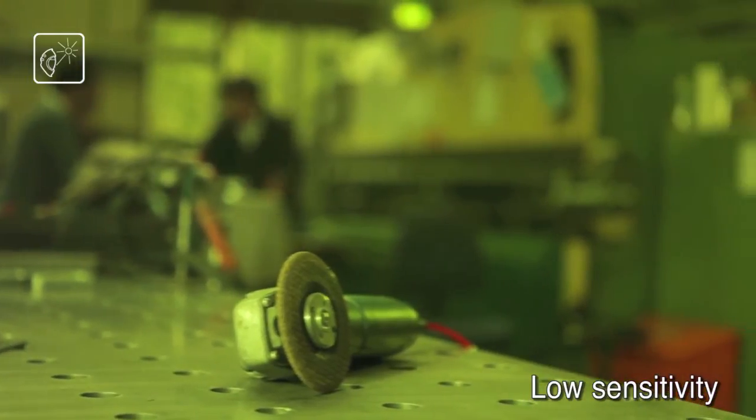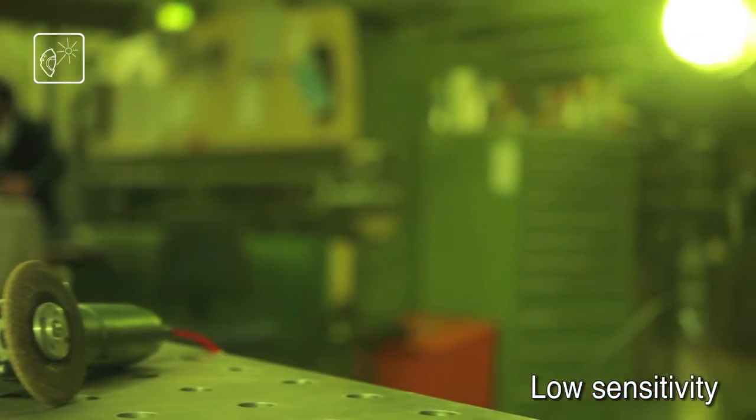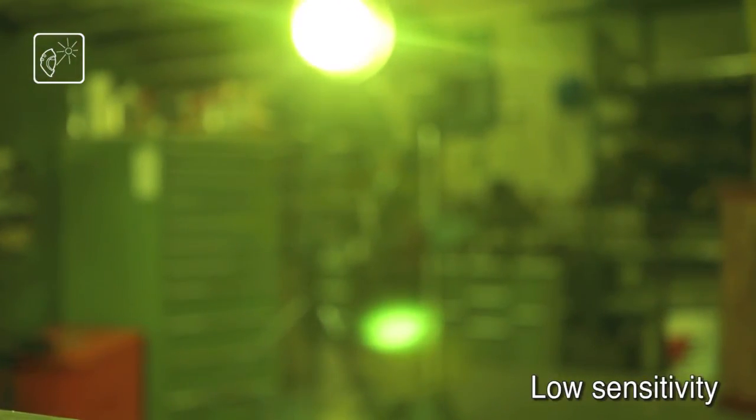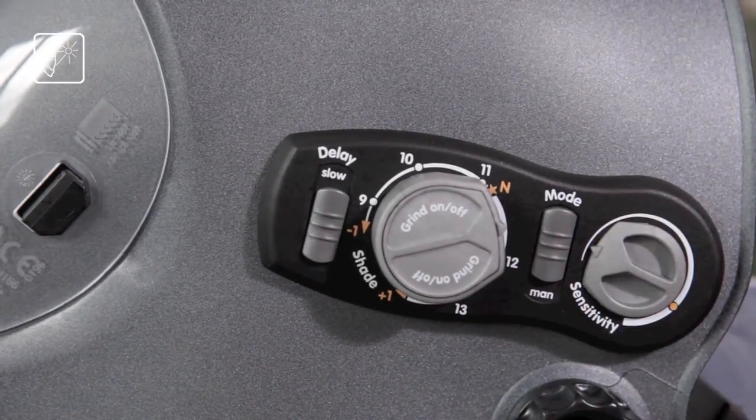This allows it to darken for applications such as low amperage TIG welding, or adjust to not darken in case of higher than normal ambient light caused by things such as overhead fluorescent lighting fixtures.